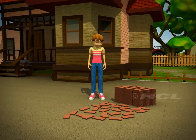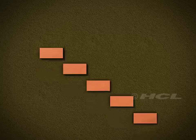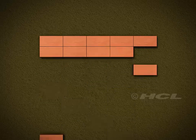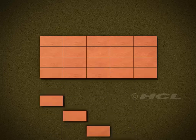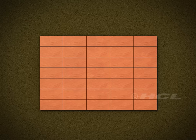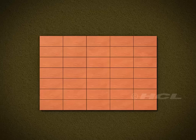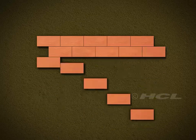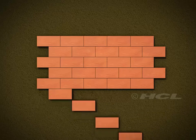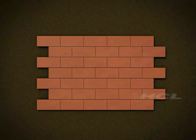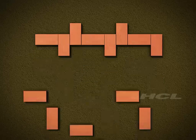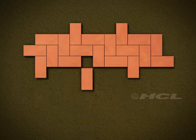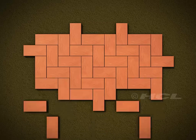Let's start making a tessellation using these rectangular tiles. Here is one pattern we can form using rectangular tiles. Note that the tiles do not overlap and there is no gap between them. Here is another such pattern that has no gap between the tiles. And this is yet another pattern formed from rectangular tiles without overlapping or leaving gaps between them.